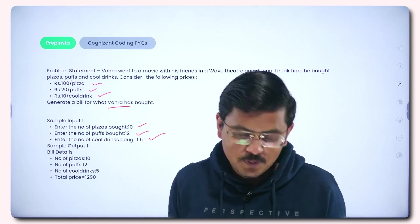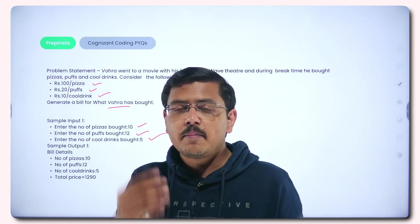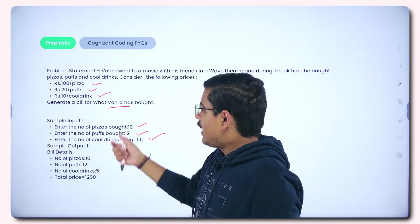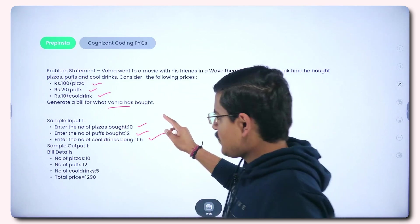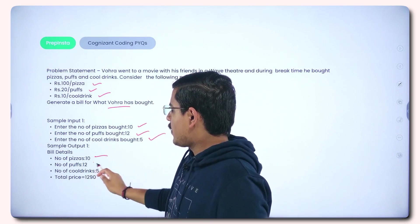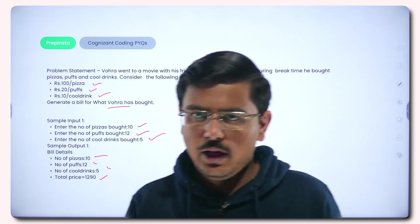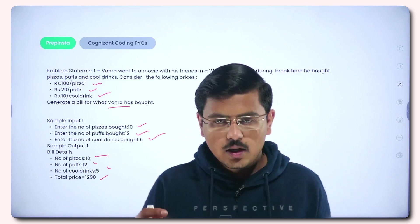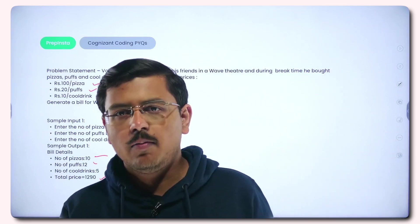Enter the number of pizzas bought 10, number of puffs bought 12, and number of cool drinks bought 5. Now in this case, remember one thing, all the items that they have bought will be separately entered in the input. So in input you will ask enter the number of pizzas, enter the number of puffs bought, enter number of cool drinks bought. When you're asking them, this will be the input. Then output comes where you will be giving out number of pizzas, number of puffs, number of cold drinks, and total price, the total grand total of bill. You can ignore GST and all, you just need to simply present the total grand total of all those things that he bought.